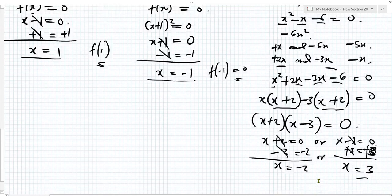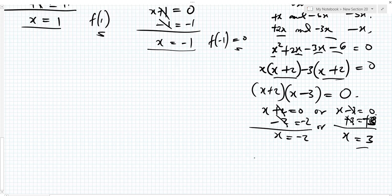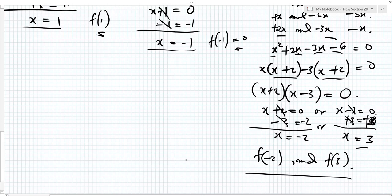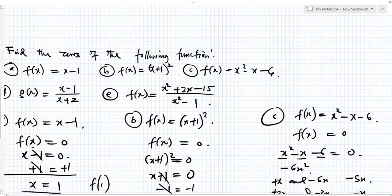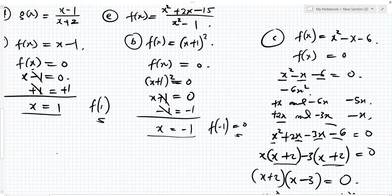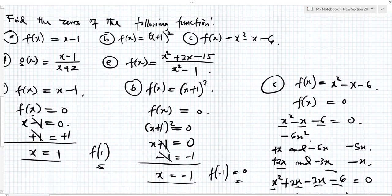So the zeros of this function are x equal to minus 2 and x equal to 3. That means f of minus 2 and f of 3 are the zeros of that function.